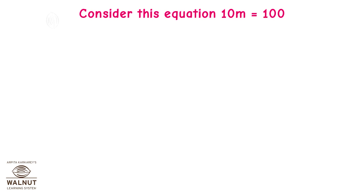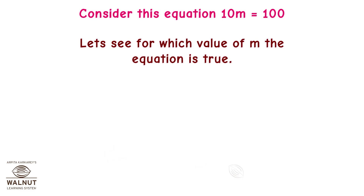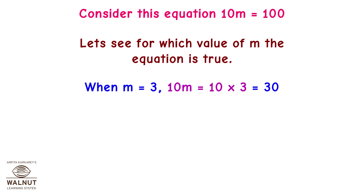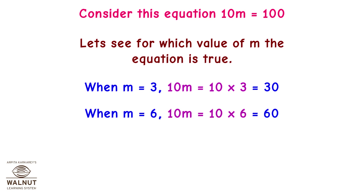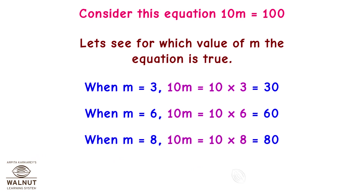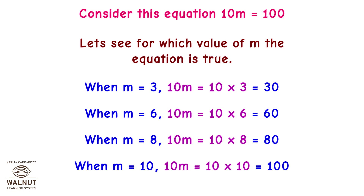Let's try one more example. Consider this equation: 10m is equal to 100. Let's see for which value of m the equation is true. When m equals 3, 10m equals 30. When m equals 6, 10m equals 60. When m equals 8, 10m equals 80. When m equals 10, 10m equals 100.